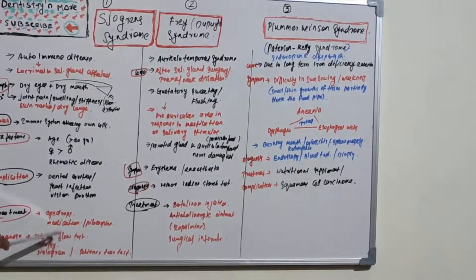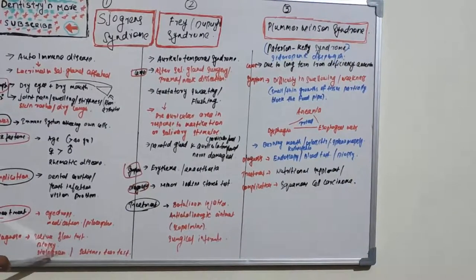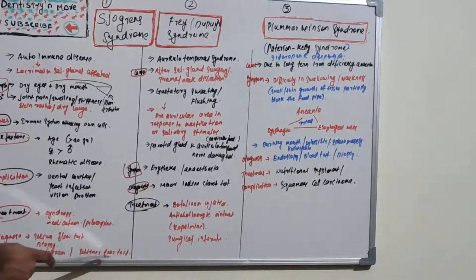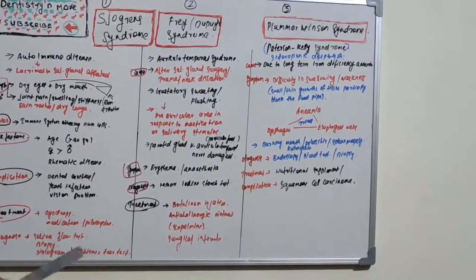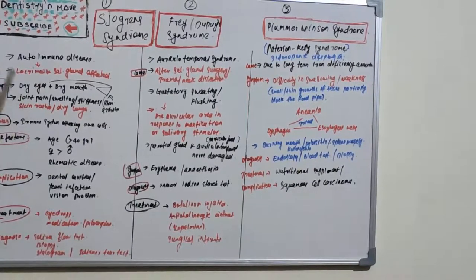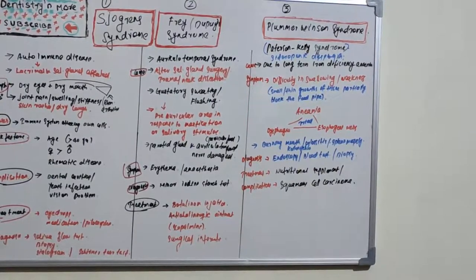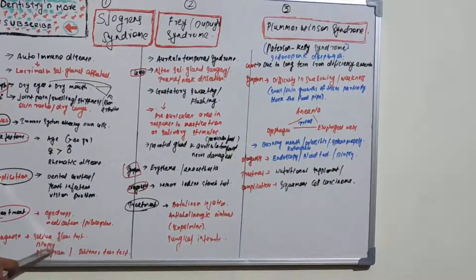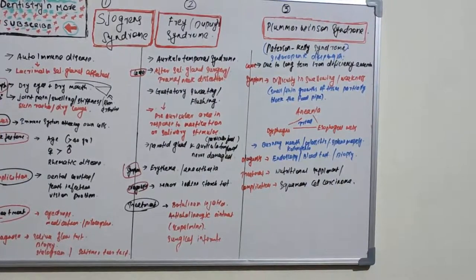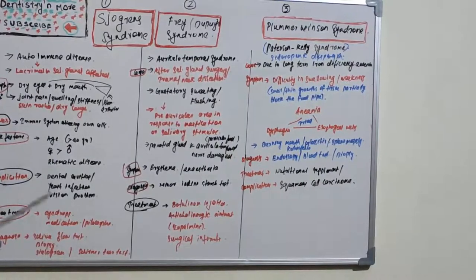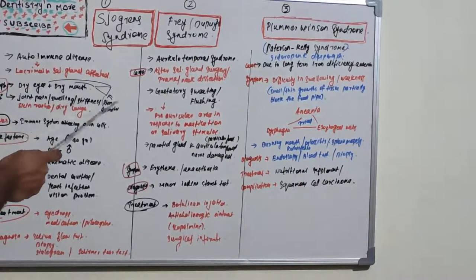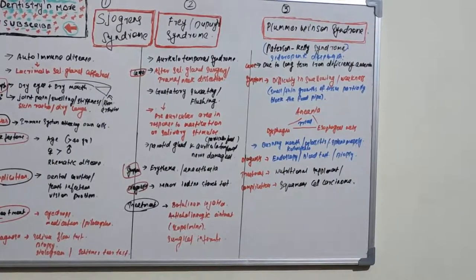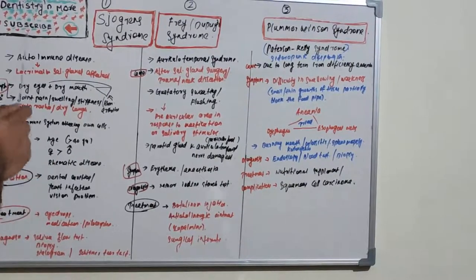Diagnosis: we can diagnose this by saliva flow test, sialogram, Schirmer tear test, which is a special test for counting the tear drops, and biopsy is another method. Basically, you should remember the triad: dry eyes, dry mouth, and rheumatoid arthritis. It is an autoimmune disease which affects lacrimal and salivary glands.